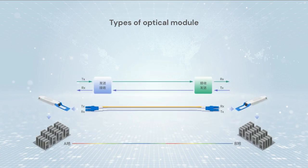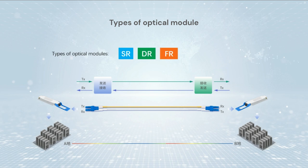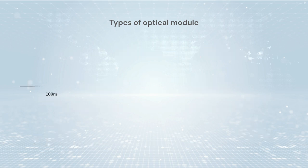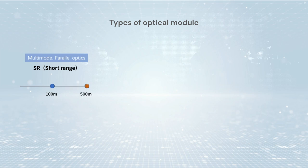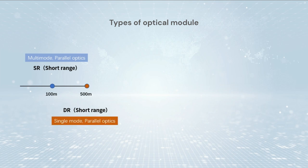According to typical transmission distance, optical module types are divided into SR, DR, FR, LR, ER, and ZR. SR stands for short reach — distance is less than 100 m — and SR optical modules mostly use multimode parallel technology. DR covers short distance less than 500 meters, adopting 1310 nm wavelength and single mode parallel technology.